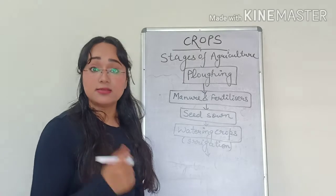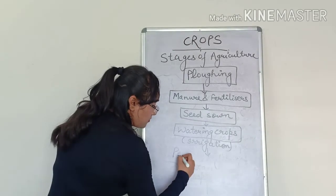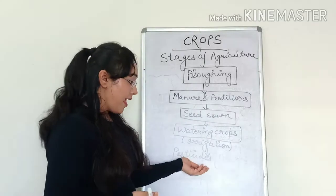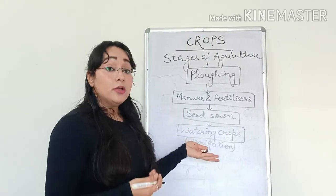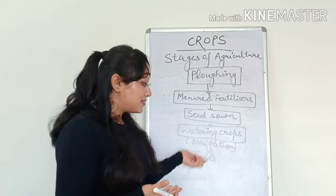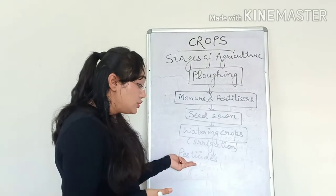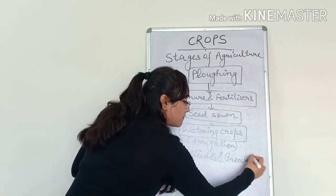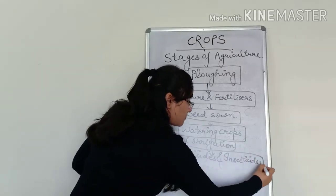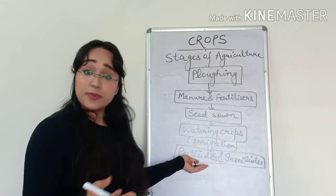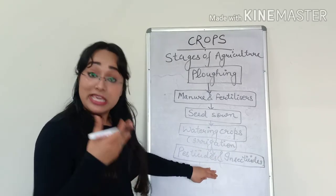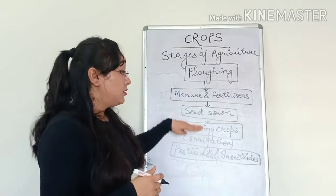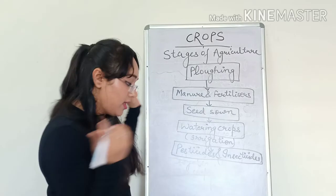After giving the water, the next step is adding pesticides and insecticides. In order to prevent the crop from disease and protecting the crop from harmful animals, we need to add pesticides and insecticides. Why are these added? In order to keep the crop away from any kind of disease that may happen due to animals, so that the seed sown can germinate in a healthy way.